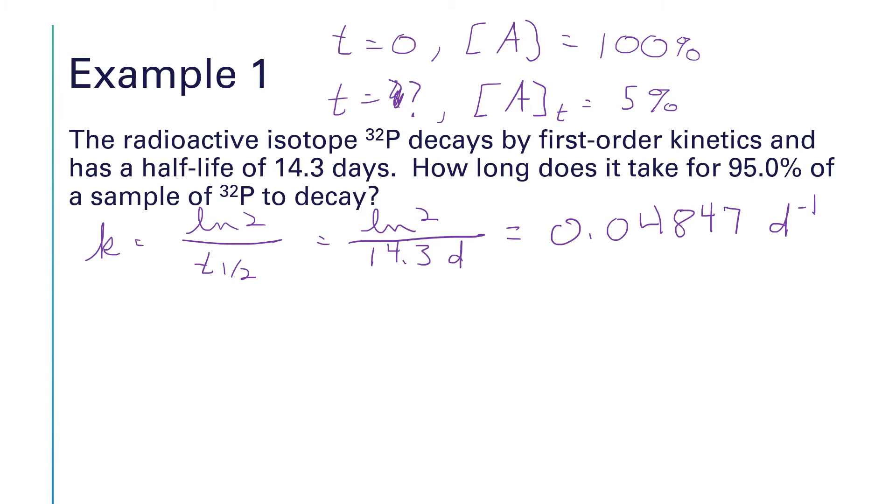Our first order integrated rate law says that the natural log of A at time t is equal to minus kt plus the natural log of A0. Well, what numbers do we have here? We have a number for A sub t, that's going to be 5%. We have a number for k, that's 0.04847. t is what we're looking for. So I'm going to go ahead and circle t to point out that's the thing we're trying to find.